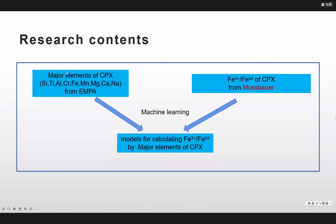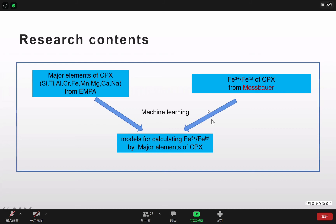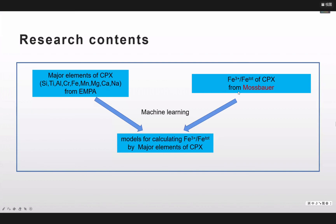This is the contents of my research. First, I have some data about the major elements of the CPX from the EMPA and also the label that is the contents of the ferric ion of the CPX, and this data from the Mossbauer spectrum. I use the method of machine learning and then I can train the models for calculating the contents of the ferric ion by the major elements of the CPX. So you can regard my research as a calculator.